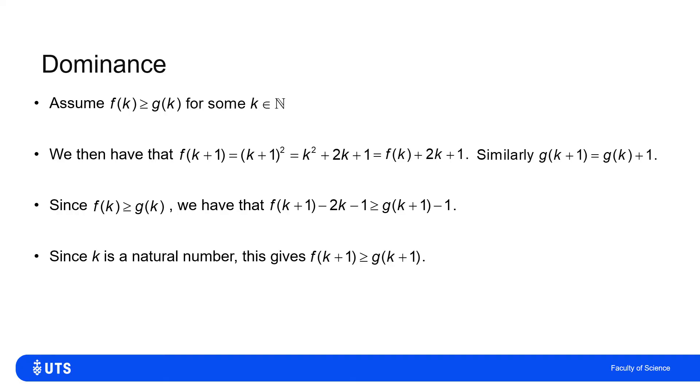Now, because k is a natural number, and therefore is not negative, I have that f of k plus 1 is greater than or equal to g of k plus 1. So what I'm showing here is that if f is greater than or equal to g, then f of k plus 1 is greater than or equal to g of k plus 1. But if the function f gets above g for some k, it'll still be above after k plus 1, therefore still above after k plus 2, and so on.